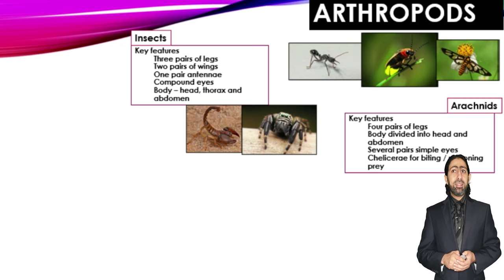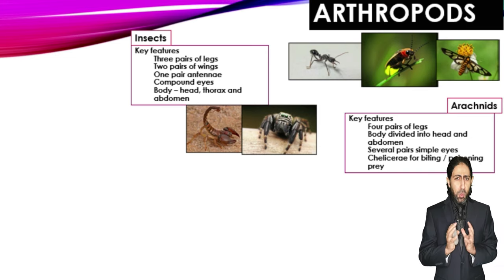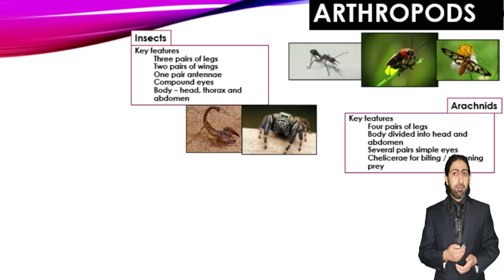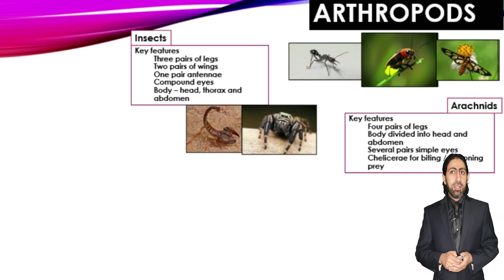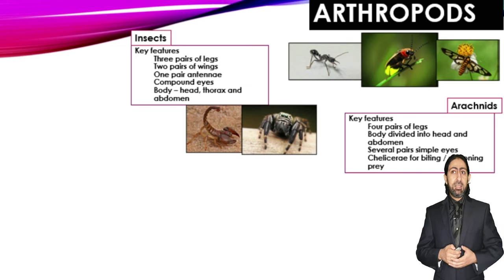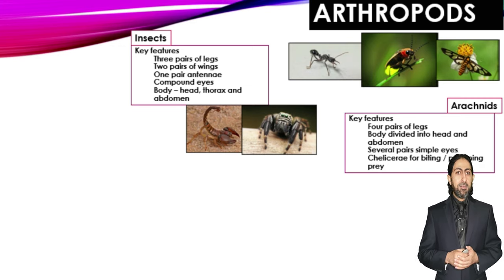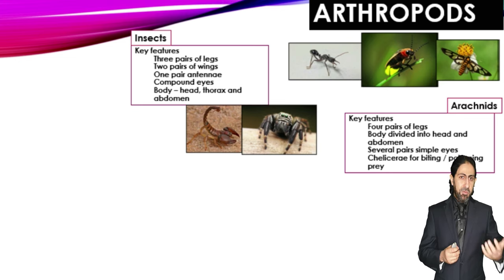In arachnids, the body is divided into the cephalothorax — where the head and thorax are fused together — and the abdomen. They have several pairs of simple eyes, not compound eyes. They also have chelicerae, which are important for biting and paralyzing their prey to enable feeding.